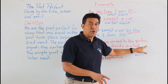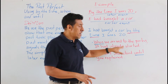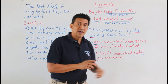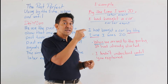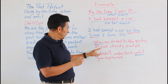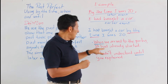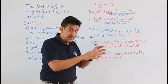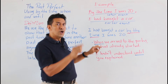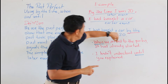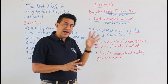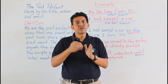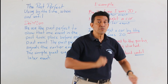When we arrived at the party, he had already started. What is the earlier event? The earlier event is in the past perfect — 'he had already started.' This means that the party had started before you arrived. Arriving is the later event. So something had happened before another event occurs.